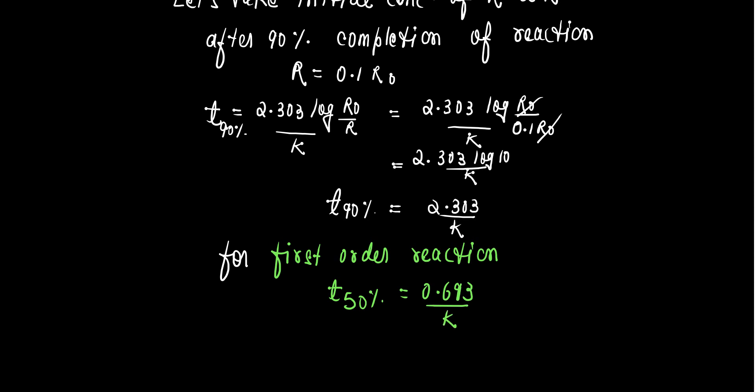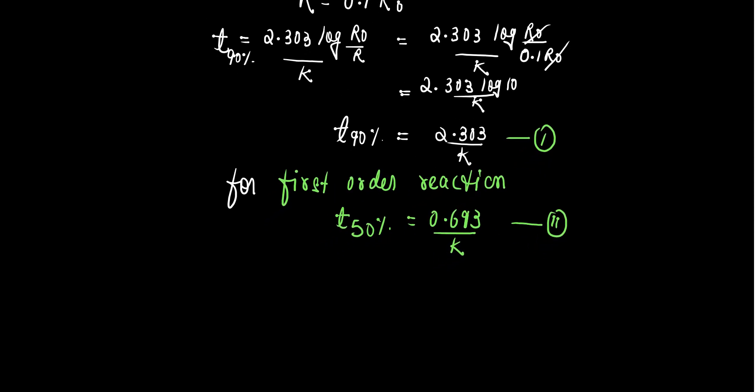We have got two things. We have got T 90% in terms of K and we have also got T 50% in terms of K. Now, we have to find out the number of half life which will be required for 90% completion of this order reaction.